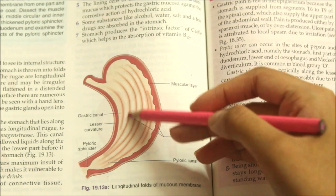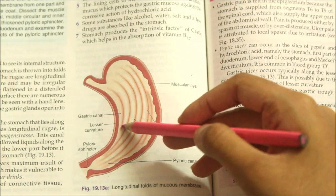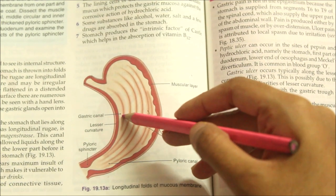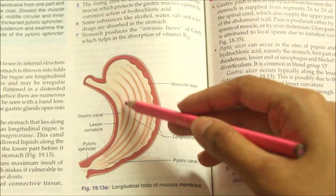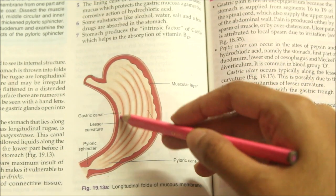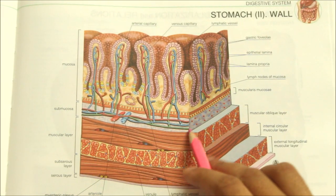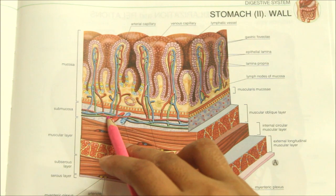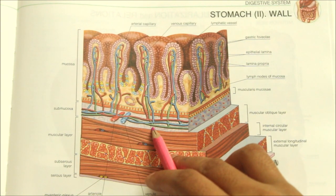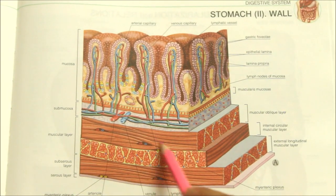The part of the lumen lying along the lesser curvature with longitudinal rugae is called the gastric canal. It allows rapid passage of swallowed liquids along the lesser curvature directly to the lower part. The submucosa is made up of connective tissue, arterioles, and nerve plexus.